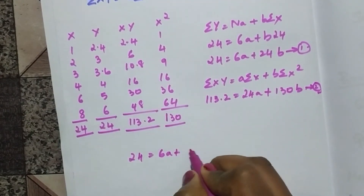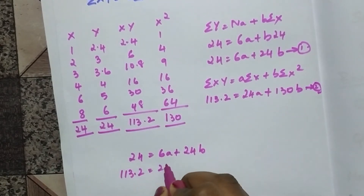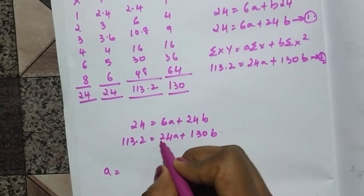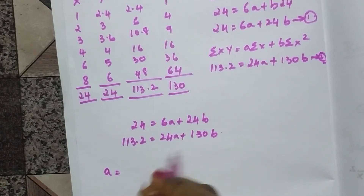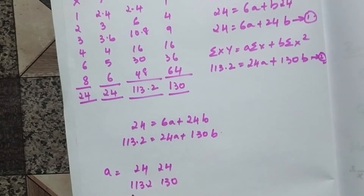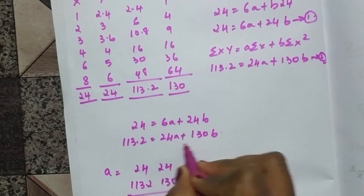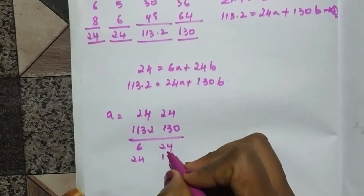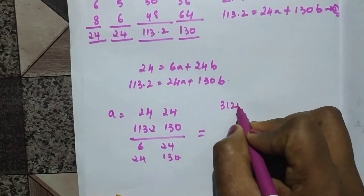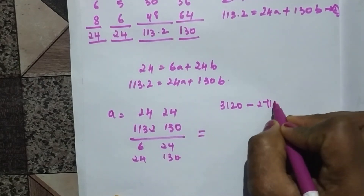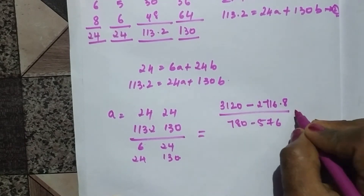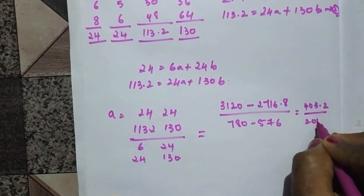Now let's solve for 'a'. We have the two equations: 24 = 6a + 24b, and 113.2 = 24a + 130b. To find 'a' using Cramer's rule, we cover the 'a' column and compute the determinant with the constants: numerator is (24×130) − (24×113.2) = 3120 − 2716.8. The denominator determinant is (6×130) − (24×24) = 780 − 576 = 204. So a = 403.2 / 204 ≈ 1.97.